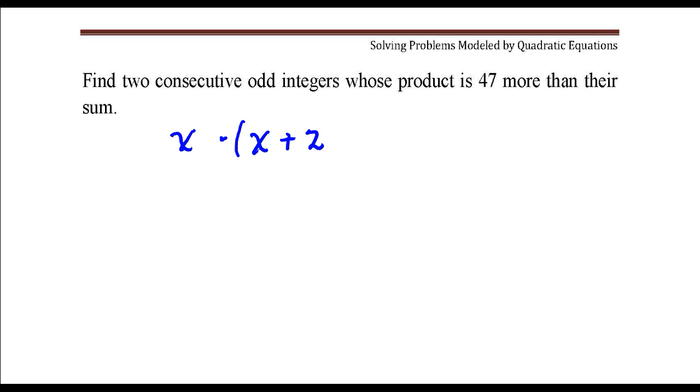So the product of those two integers is 47 more than the sum of those two integers, x plus x plus 2.